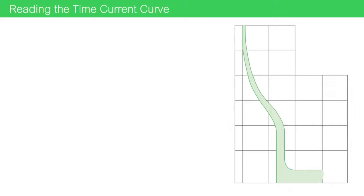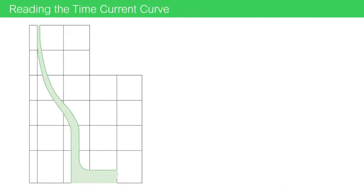We simplify and clean up this time-current curve so we can focus on the shaded green area in between the curves and what this represents. Again, we have time in seconds on the vertical axis and multiples of rated current on the horizontal axis.